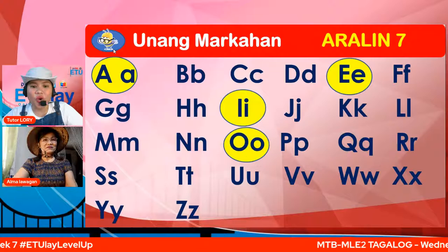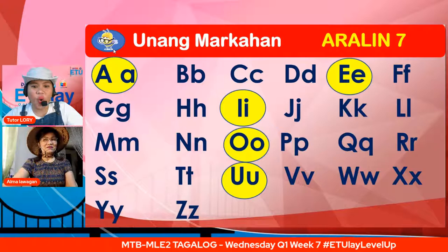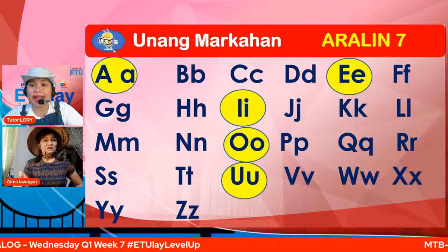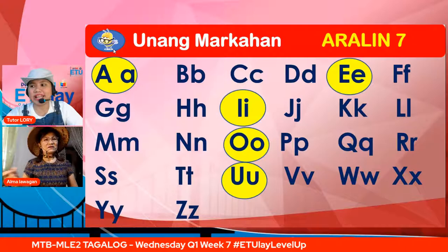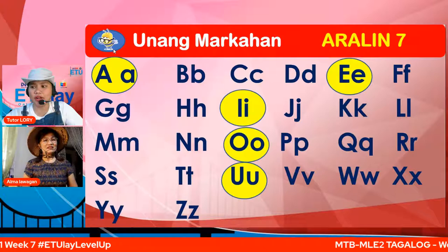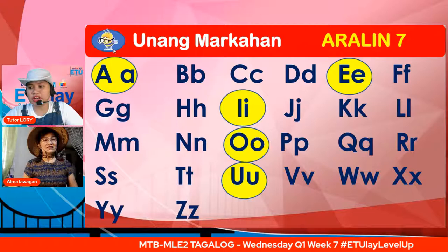Ano kaya silang pangkat? Sila ba ay katinig o patinig, mga chuti? Ang sabi ni Rohe, ni Althea — ang sabi nila ay patinig. Tama. Ito ay mga patinig. Ang mga nakabilog na mga letra ay patinig: letrang A may tunog na A, letrang E may tunog na E, letrang I may tunog na I, letrang O may tunog na O, at letrang U may tunog na U. Ang mga hindi nakabilog ay katinig.